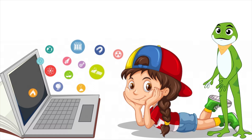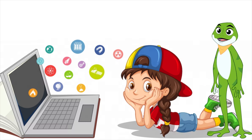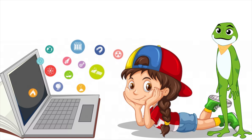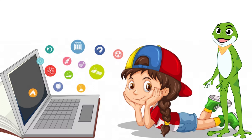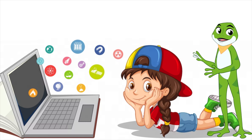So, in short, software is a set of programs that helps you do things on your computer, like drawing pictures, writing stories, and playing games. And just like how you might have different tools in your pencil case, there are lots of different software programs that can help you do different things on your computer.